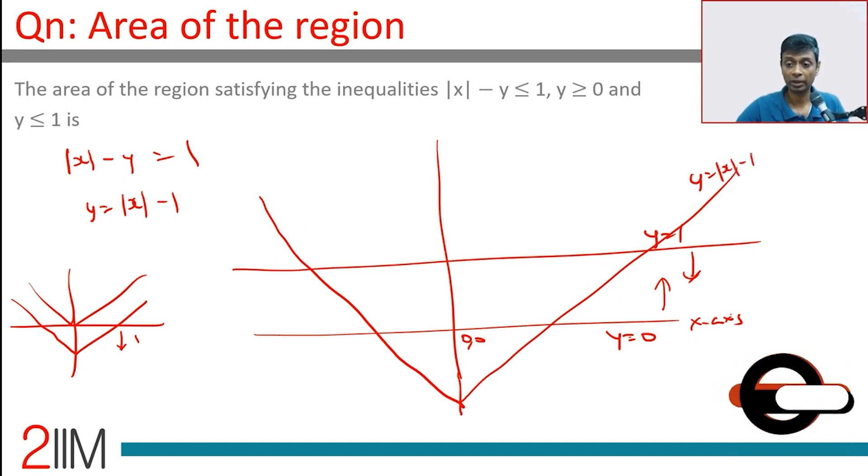y = |x| - 1 line. So this point will be (0, -1). Put x = 0, y will be -1. This point, when will y be 0? When x is 1, (1, 0), or x is -1, (-1, 0).